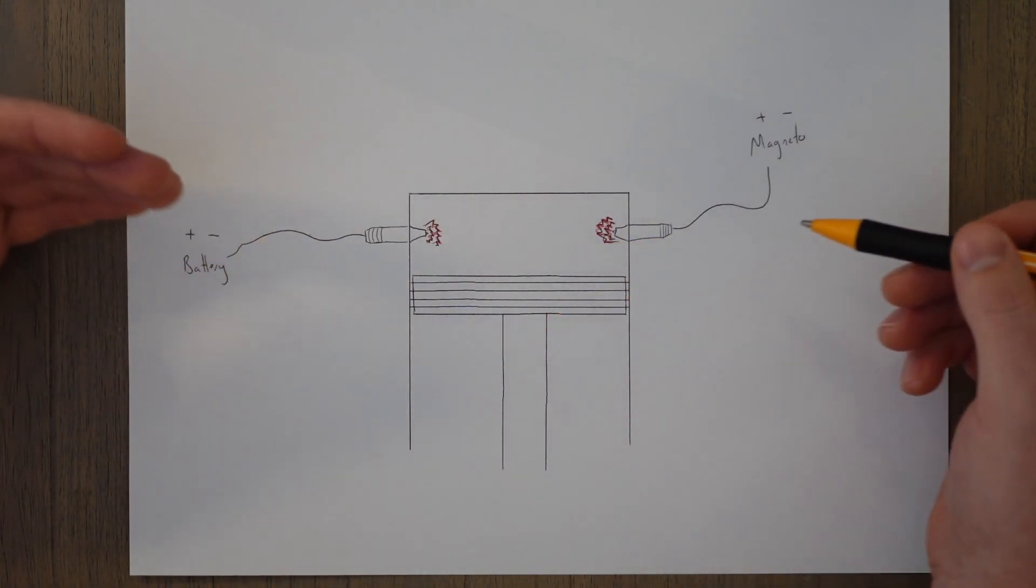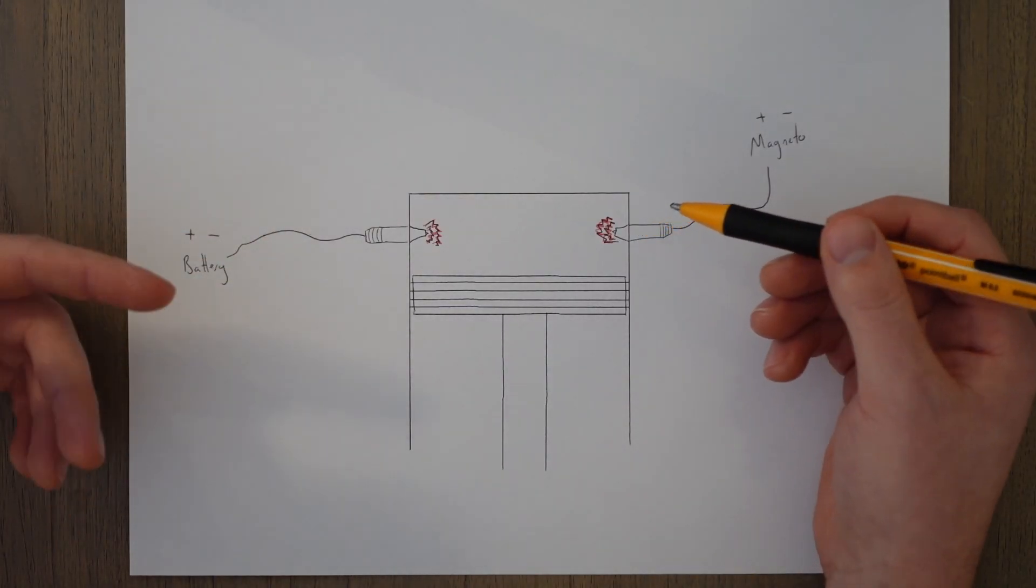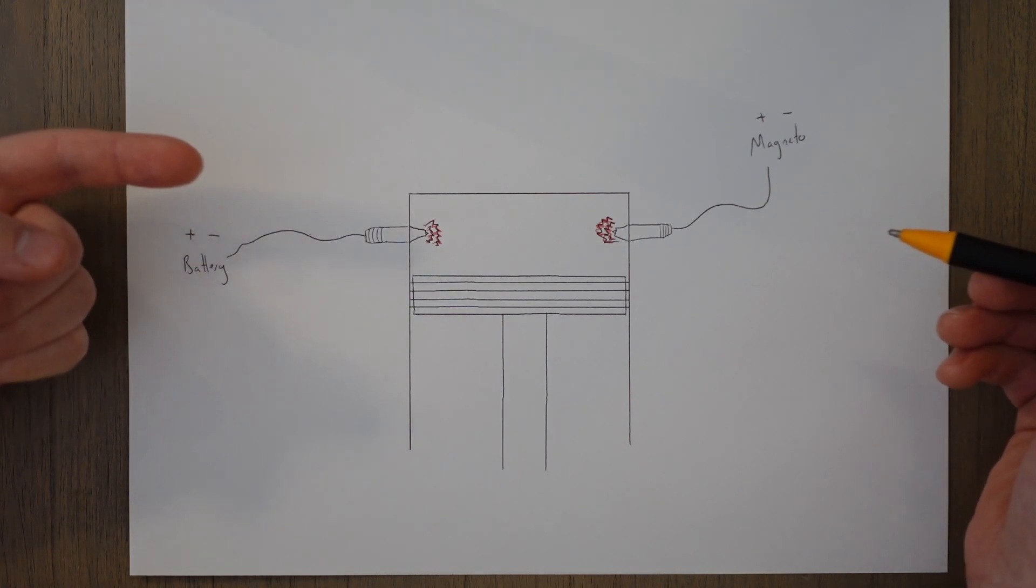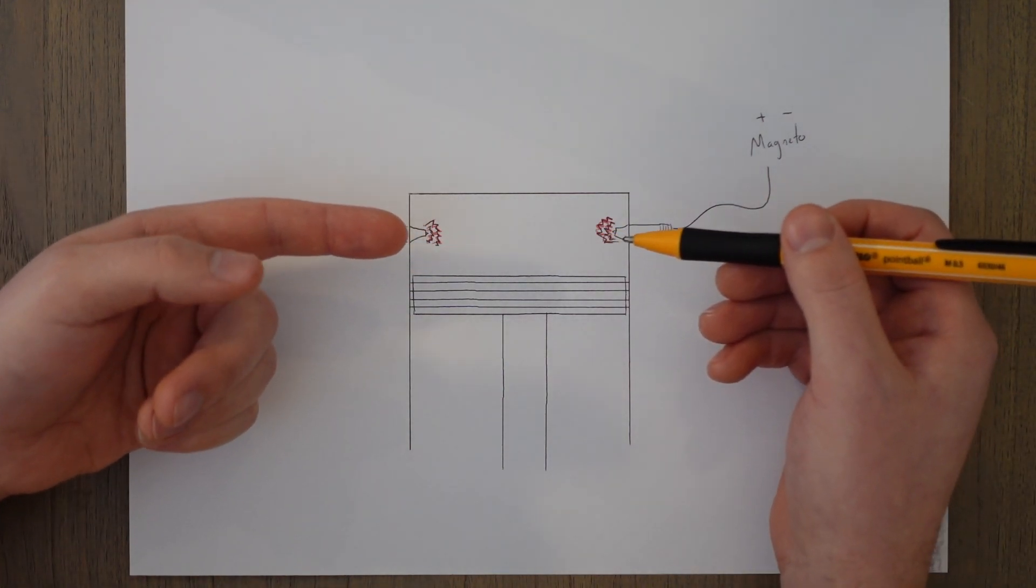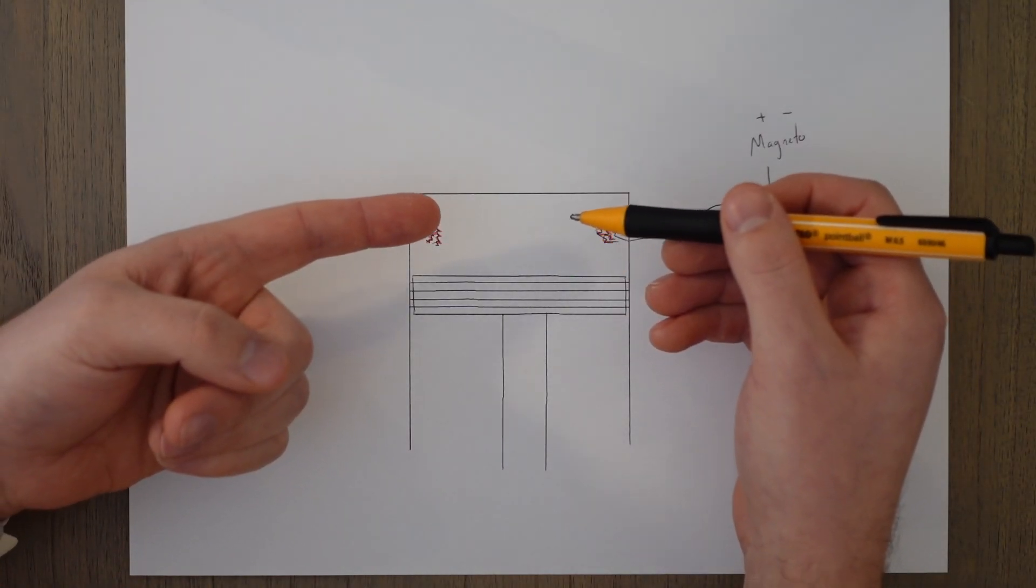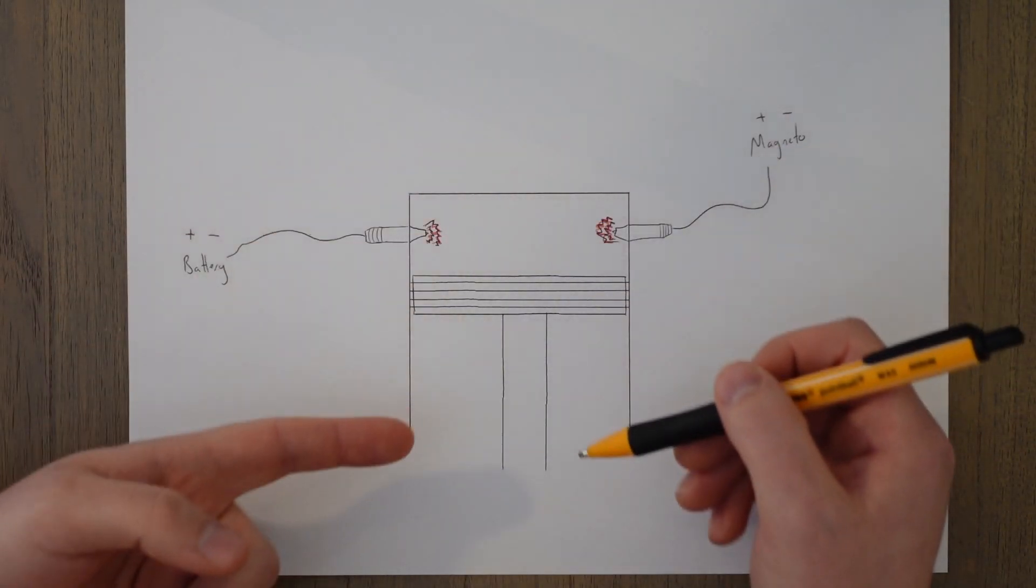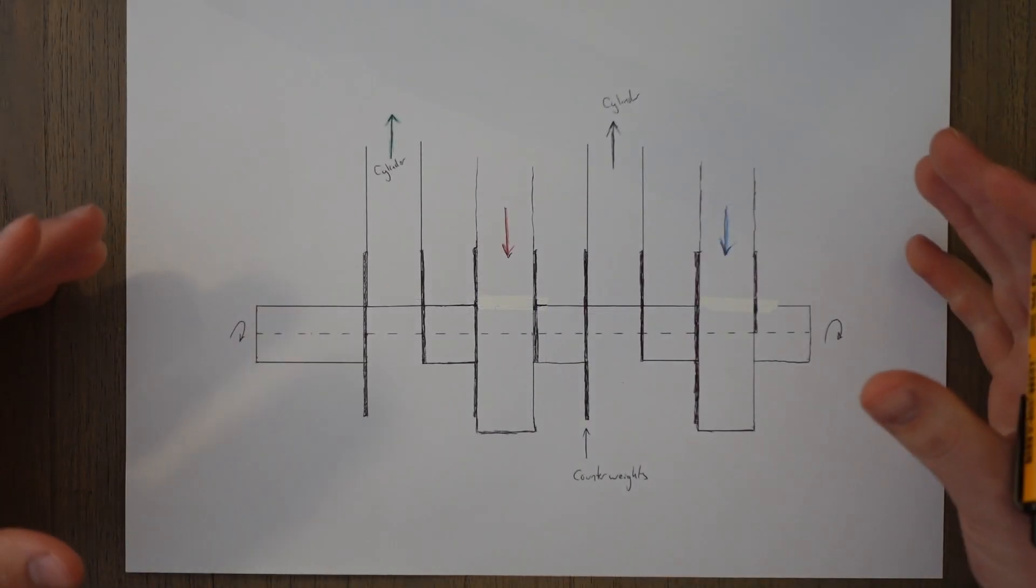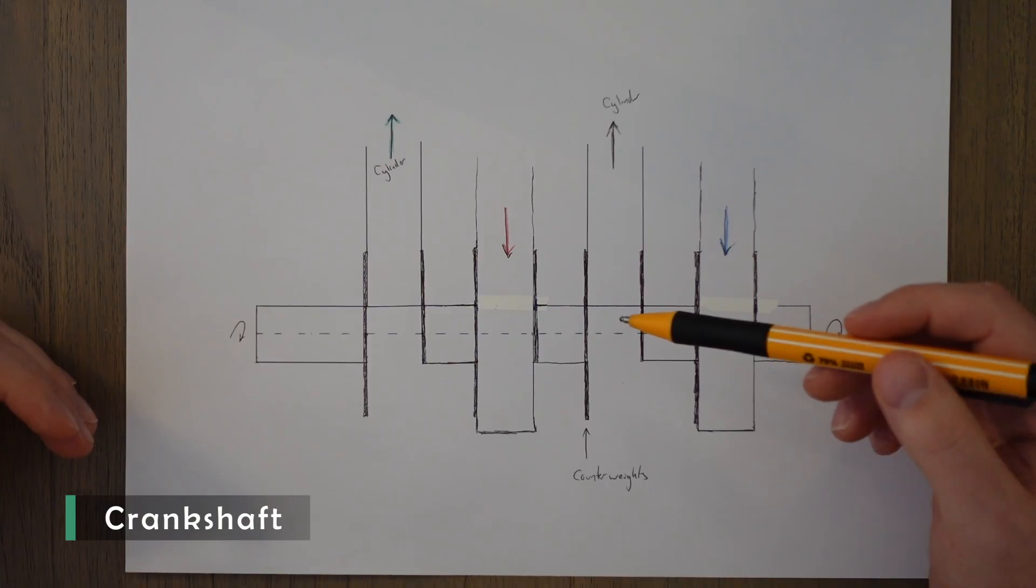If we have two spark plugs as well, it also increases the efficiency of the engine as the gases in the cylinder are ignited from both sides simultaneously, which creates a more even burn in this area and allows the piston to be propelled down the cylinder in a much more even fashion.